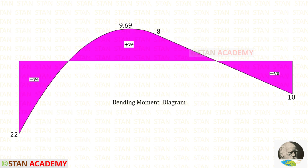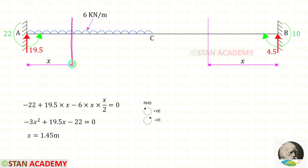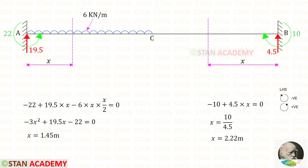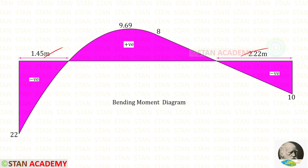Here you can see the bending moment diagram. At two points the bending moment becomes 0. Making sections at those points: for the left-side point, the section is at distance x from point A, giving x = 1.45 meters; for the right-side point, the section is at distance x from point B, giving x = 2.22 meters. That concludes this session. Thank you for watching this video.